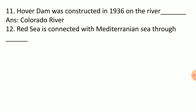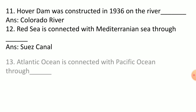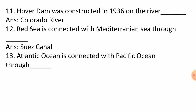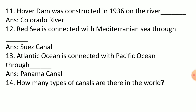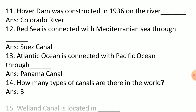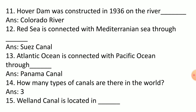The Red Sea is connected with the Mediterranean Sea through the Suez Canal. The Atlantic Ocean is connected with the Pacific Ocean through the Panama Canal. There are three types of canals in the world. The Welland Canal is located in Canada.